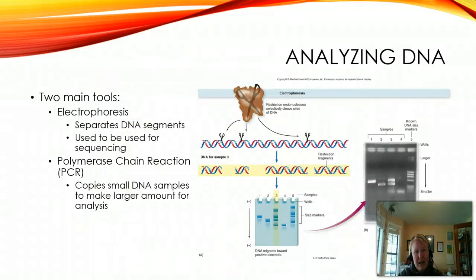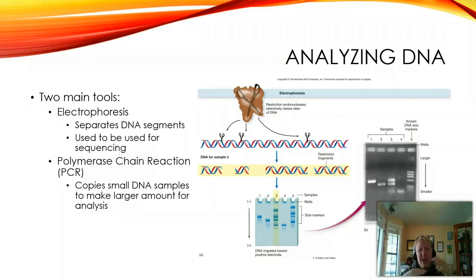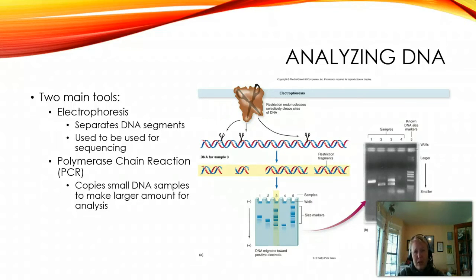If we cut that DNA up into little fragments, we can then run them on a gel using a technique called electrophoresis, which you should be exposed to later in lab this semester. Electrophoresis separates DNA by segment size because the gel is like a matrix — the big pieces don't get through very fast, the small pieces get through really fast. If we were to take a whole series of samples and cut them using the same restriction enzymes, we would be able to see how similar they are because those enzymes would cut in the same place every time.